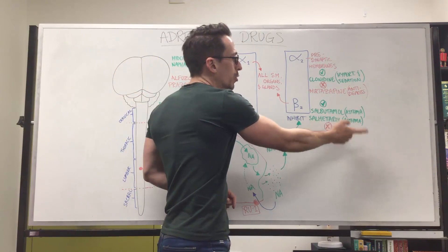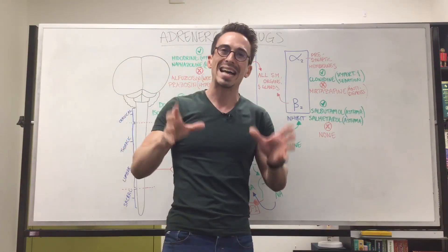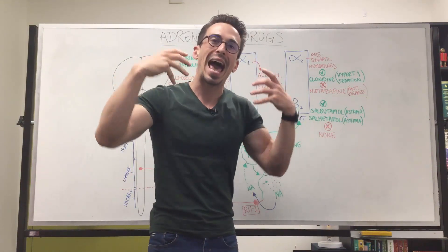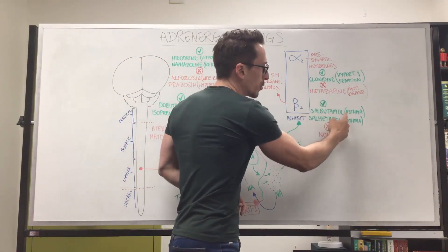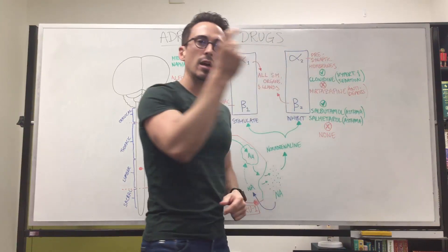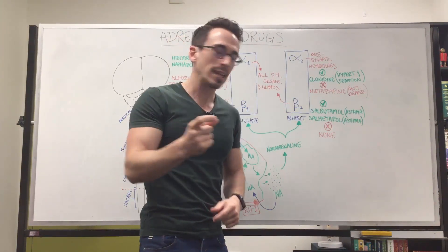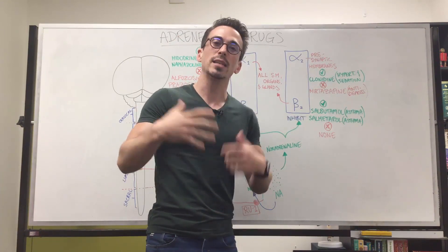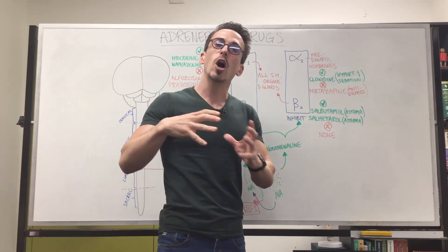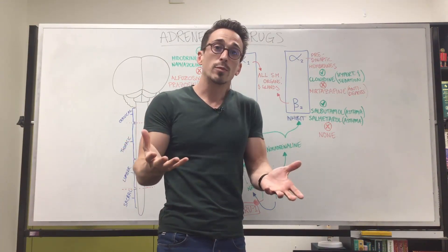We've got salbutamol and salmeterol. These are both used in asthma. These are agonists of beta-2. For example, salbutamol is a short acting beta-2 agonist and salmeterol is a long acting beta-2 agonist. Again, tells the airways to relax, open up in times of asthma, for example.